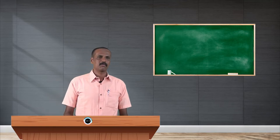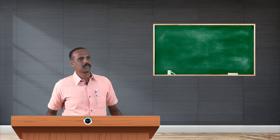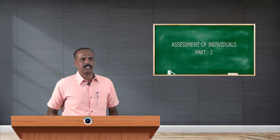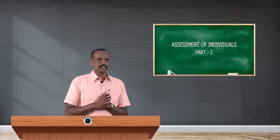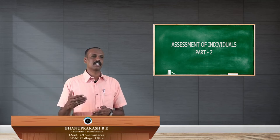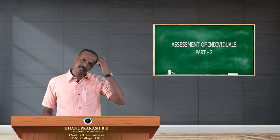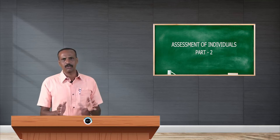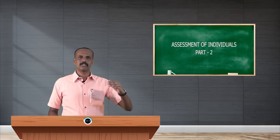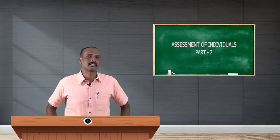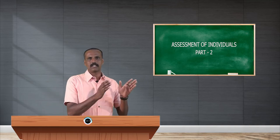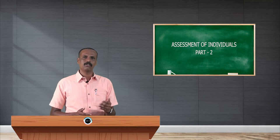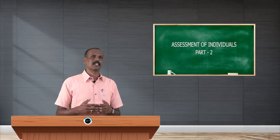Hello students. Last class we discussed various steps in assessment of an individual. We discussed up to 8 steps, and the next and last step is calculation of taxes and deduction of TCS, TDS, or any advance taxes. Tax deducted at source, tax collected at source, or any advance tax paid — that amount has to be deducted from the tax liability, and the remaining amount is called tax liability. That is assessment of individual, covering all the steps we follow while assessing the individual for calculation of tax liability.